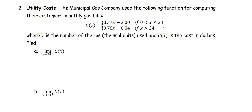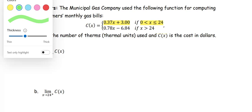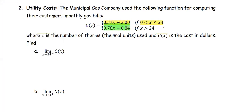In this example, the municipal gas company used the following function for computing their consumers' gas bills. The cost function C(x) is defined as 0.37x plus 3 if x is strictly greater than 0 and less than or equal to 24. It is defined as 0.78x minus 6.84 if x is greater than 24, where x is the number of therms or units used and C(x) is the cost in dollars.